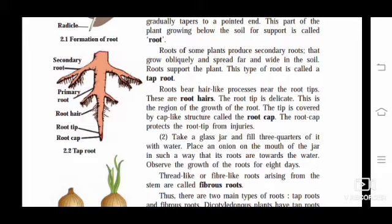Roots bear hair-like processes near the root tips. These are root hairs. The root tip is very delicate. This is the region of growth of the root. The tip is covered by a cap-like structure called the root cap, which protects the root tip from injuries. These are the different parts: root hair, root cap, root tip, etc.